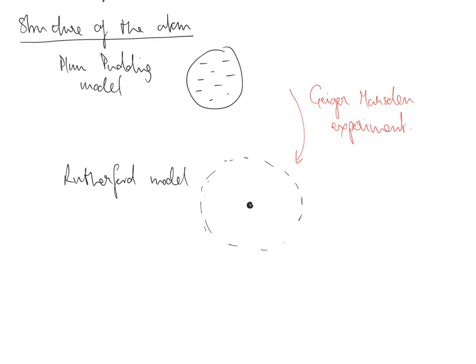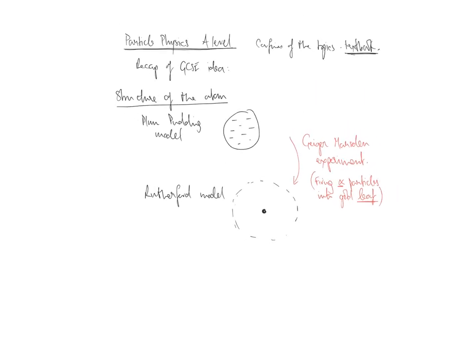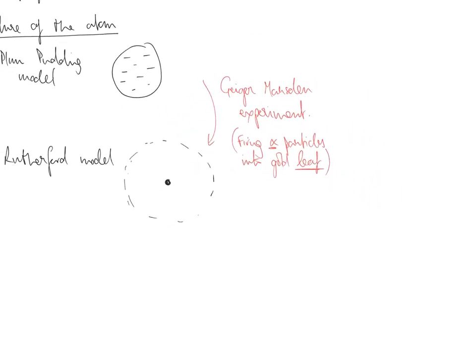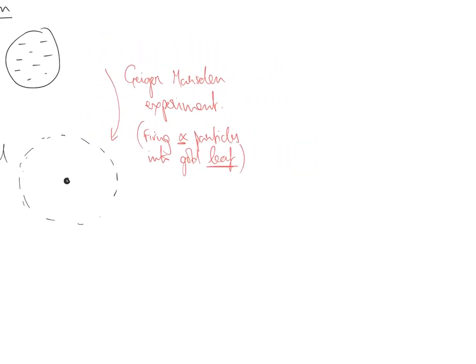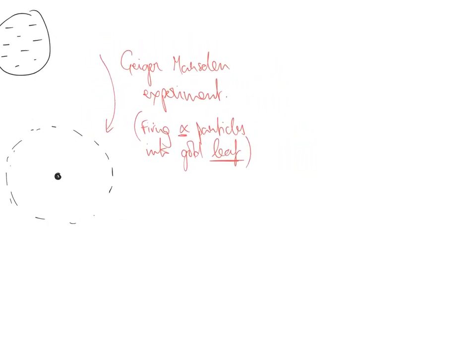And essentially, what happened here is you're firing alpha particles into gold leaf. Gold leaf, meaning very thin, and alpha, which I hope you know, is a helium nucleus. And we probably took a long time to explain that at GCSE, and explain what was going on. Let me just get a video to explain what the Geiger-Marsden experiment is.